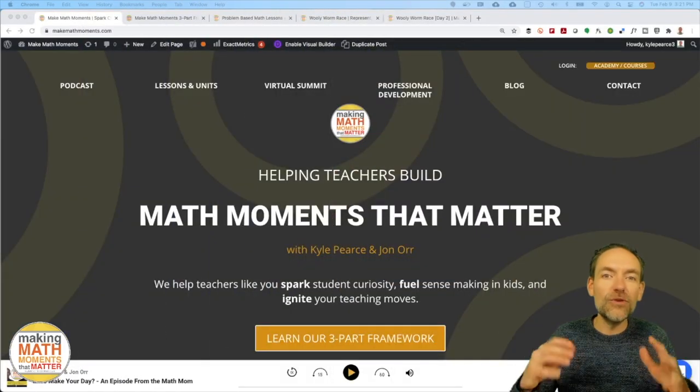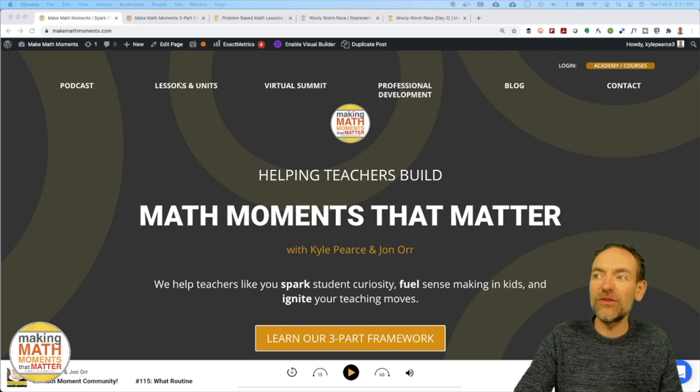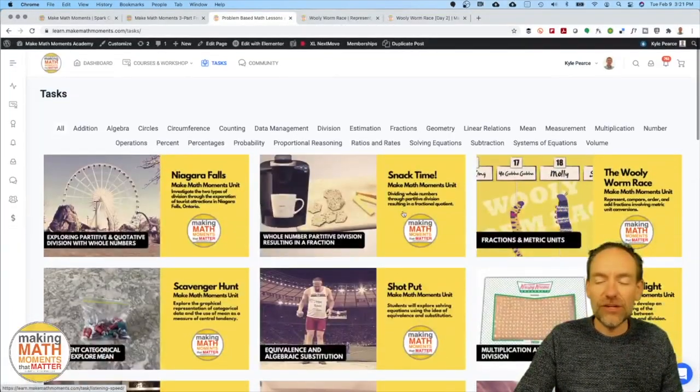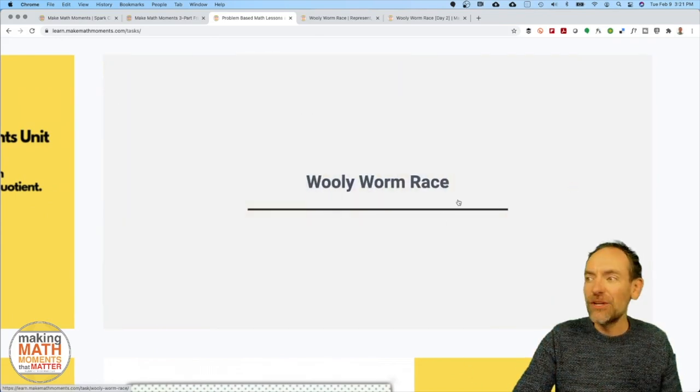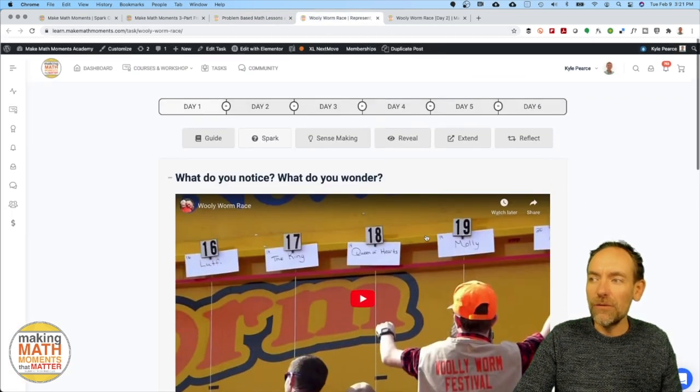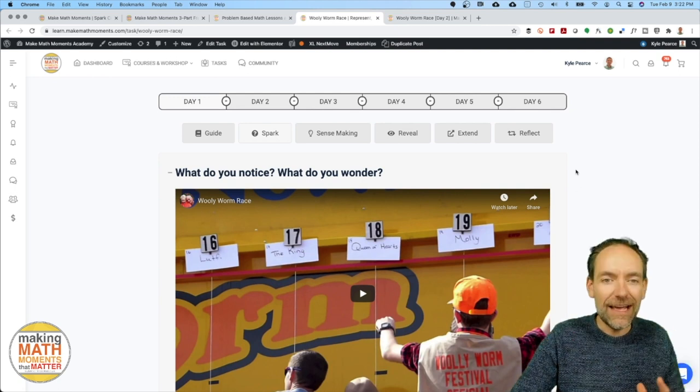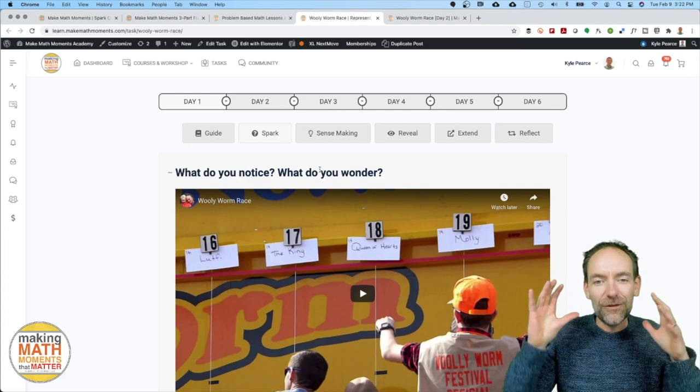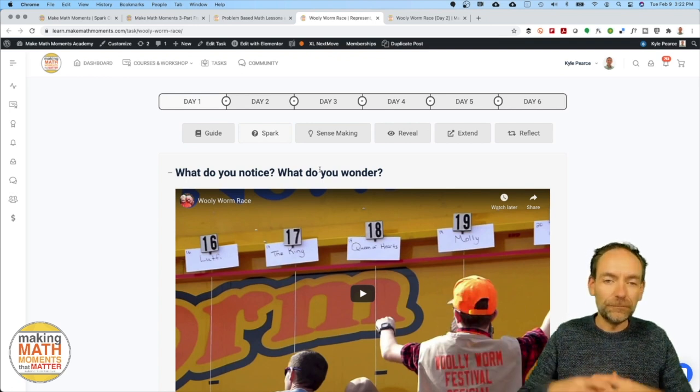I'm going to quickly share where you can find this task and a complete unit that goes along with it. If you head to MakeMathMoments.com, you'll be able to hop over to our lessons and units screen. From here, you'll be able to see all of our problem-based lessons, many of which have a full unit that go along with them. The one that we did today was a modified version of the Woolly Worm Race.